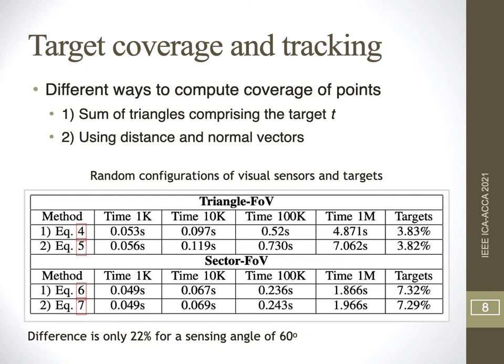What is interesting in this evaluation is the percentage of viewed targets. We defined a square monitoring field with targets at random positions and one single visual sensor also at a random position. The average percentage of targets viewed for the triangle FOV was 3.83%, which is almost half the percentage of targets viewed by the sector FOV. However, when considering a view angle of 60 degrees — a very common angle in real visual sensing applications and real hardware — the difference decreases to only 22%, which is highly acceptable.